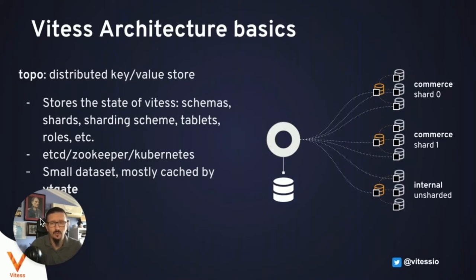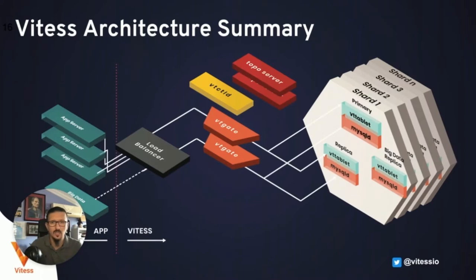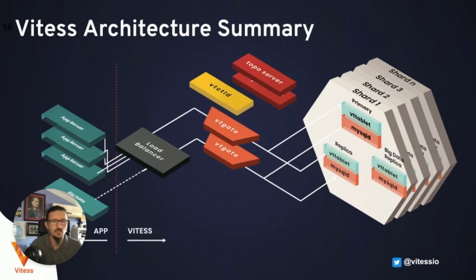Another important component of Vitesse architecture is the topo. Topo is the state of where MySQL and database components are, as well as the Vitesse components. Multiple implementations are available: favorites include etcd, ZooKeeper, and Kubernetes; Consul was also used in the past. VTC-TLD is a control daemon that runs ad hoc operations, serves as an API server, and interacts with the topo. In the architecture summary, an application server connects to a load balancer, which speaks to VT gate, which interacts with VTC-TLD and topo server to serve incoming queries from the sharded clusters.